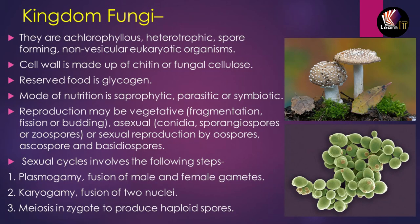Kingdom Fungi are achlorophyllous, meaning they do not contain chlorophyll and are not photosynthetic. They are heterotrophic, depending on other organisms for food. They are spore-forming and are eukaryotic organisms with non-vascular structure. Their cell wall is made up of chitin, or fungal cellulose — this is a specialty of fungi. The reserved food material in fungi is glycogen.